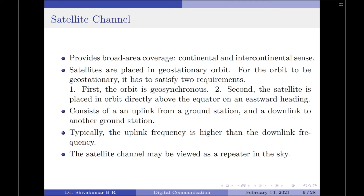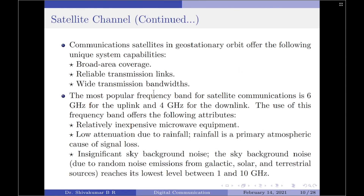Thus, the satellite channel may be viewed as a repeater in the sky, permitting communication over long distances at high bandwidths and relatively low cost. Communication satellites in geostationary orbit offer unique capabilities such as broad area coverage, reliable transmission links, and wide transmission bandwidths. The most popular frequency band for satellite communication is 6 GHz for the uplink and 4 GHz for the downlink. This band offers relatively inexpensive microwave equipment, low attenuation due to rainfall, and insignificant sky background noise. The sky background noise — due to random noise emissions from galactic, solar, and terrestrial sources — reaches its lowest level between 1 to 10 GHz, which is why 6 GHz and 4 GHz are used.